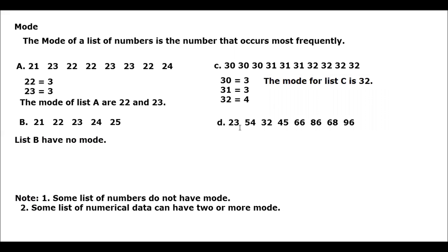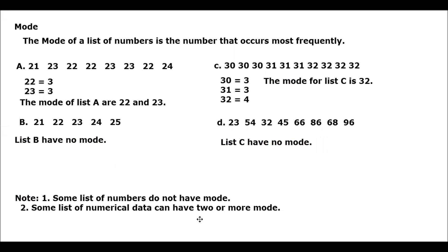For letter D, we have 23, 54, 32, 45, 66, 86, 68, and 96. Since each number appears only once, list D has no mode. Take note: some list of numbers do not have a mode, and some list of numerical data can have two or more modes. I hope you understand the discussion through this video, and God bless us all. Next is your assignment number 9. Thank you for watching.